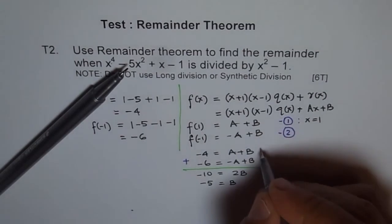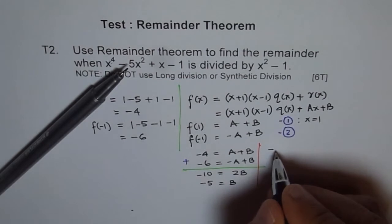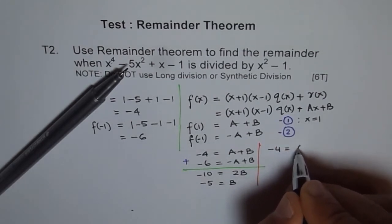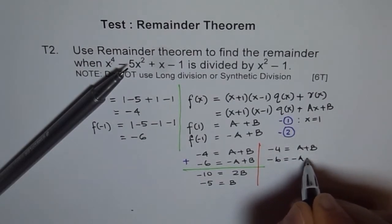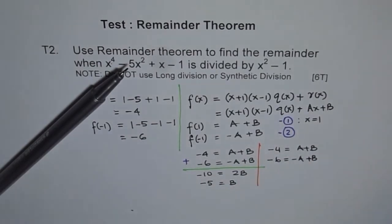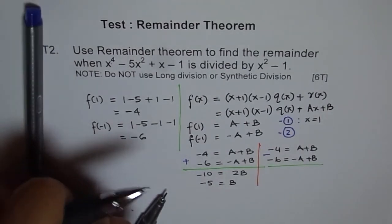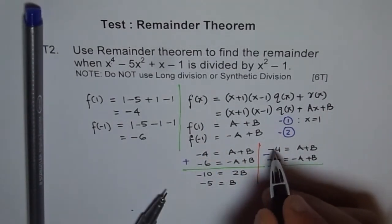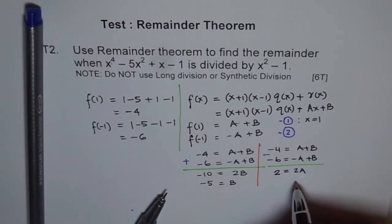Let me do this again and this time I will subtract them. So I will write minus 4 equals a plus b, minus 6 equals minus a plus b. This time I will subtract them. When I subtract them, I get 2 here. This minus this will give me 2a. That means a equals 1.